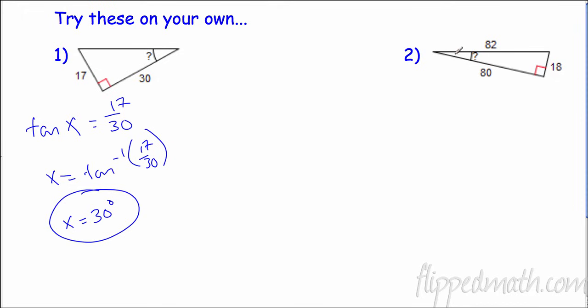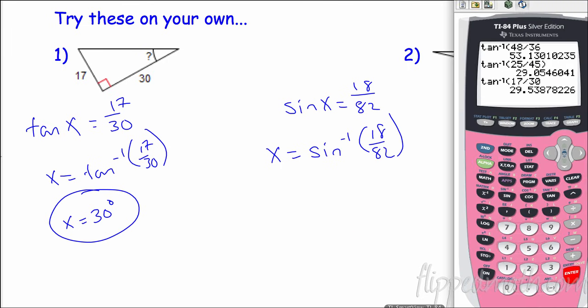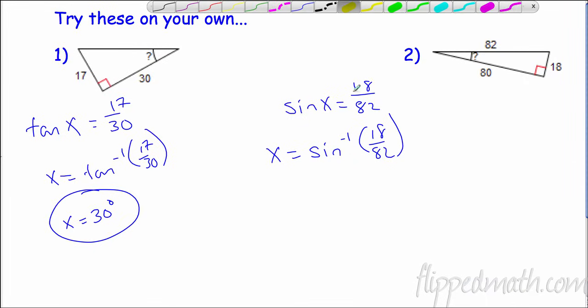Over here, we can use any of them. Let's use sine. Sine is opposite over hypotenuse. So sine x equals 18 over 82. So x equals inverse sine of 18 over 82. See what we get. Boom shakalaka at 12.6, which is 13. So x is 13 degrees.